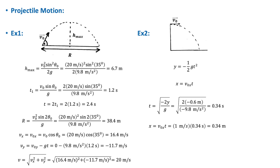Let's consider an example: a baseball is thrown at an angle of 35° to the horizontal with an initial speed of 20 m/s, neglecting air resistance. We want to calculate the maximum height. Substituting v₀ = 20 m/s and θ₀ = 35°, we get a maximum height of 6.7 meters.